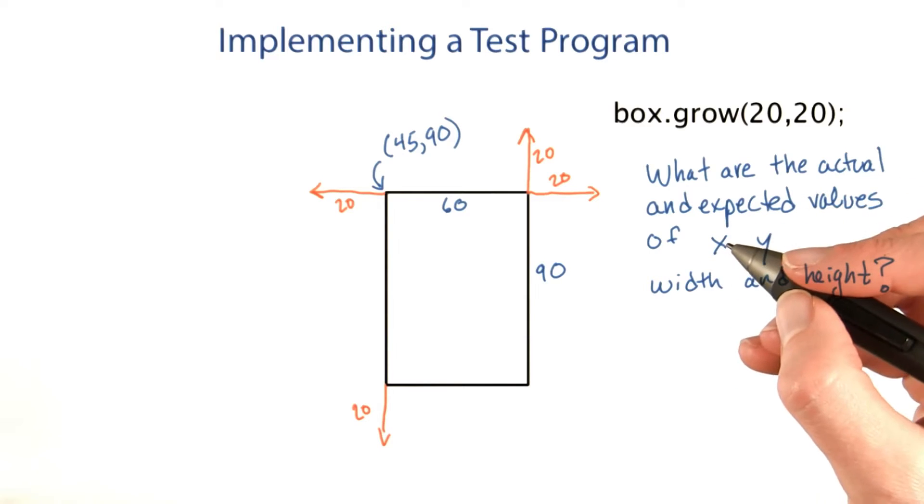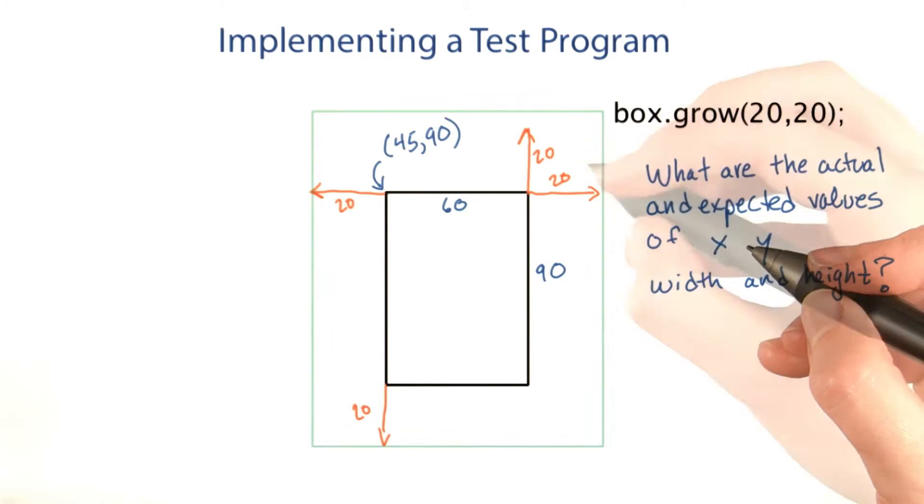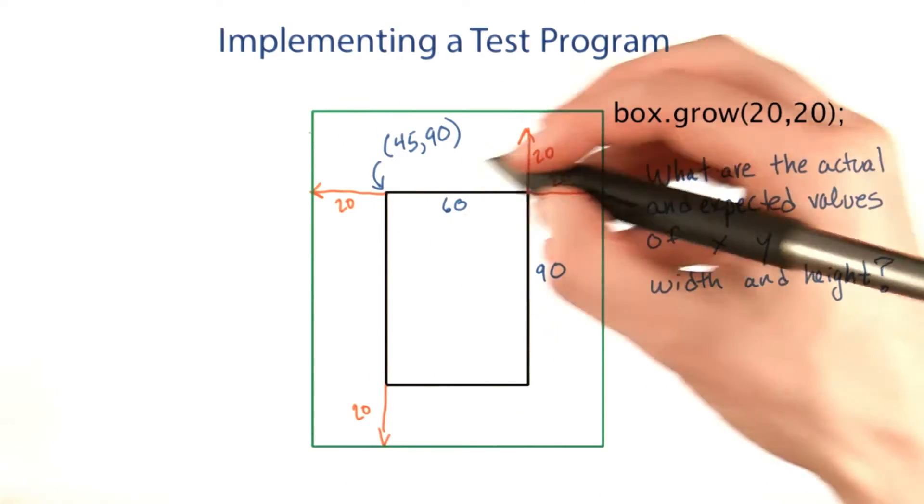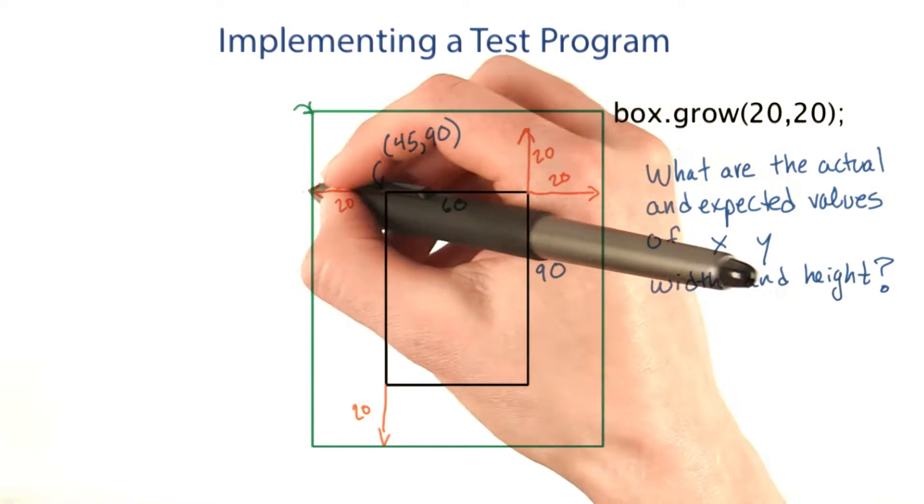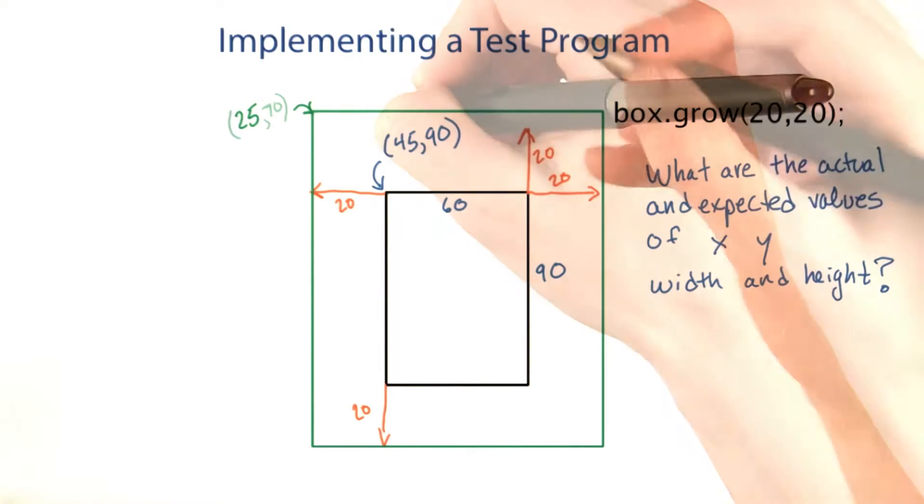Before we can write any code, we need to figure out what the expected values are. If this green rectangle is what our rectangle grows to, this point should be at 45 minus 20 and 90 minus 20.